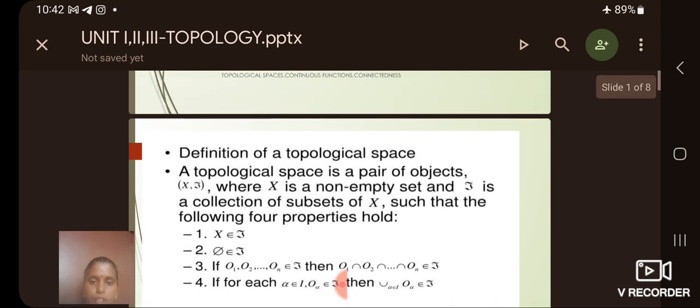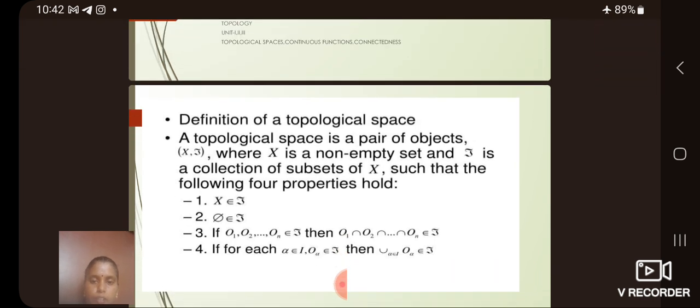First of all, let me see the definition of a topological space. A topological space is a pair of objects x, tau, where x is a non-empty set and tau is a collection of subsets of x such that the following four properties hold. First, x belongs to tau and phi belongs to tau.